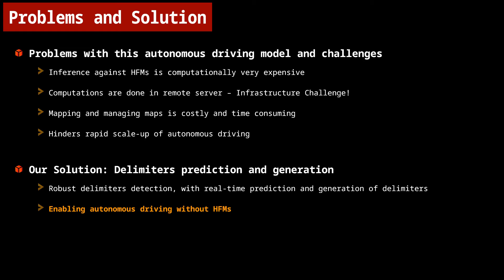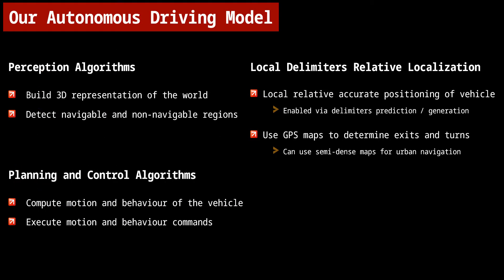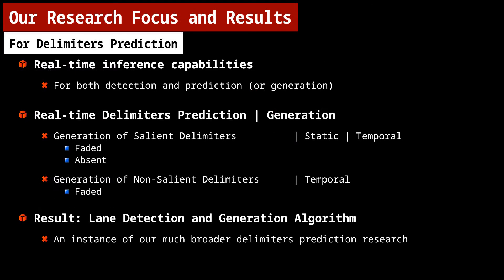This enables autonomous driving without HFMs. As we can both detect and generate delimiters in real time, it eliminates the need to project them from HFMs. Our autonomous driving model thus works by only local relative positioning of the vehicle with respect to delimiters, enabling autonomous driving using only GPS maps. Over the past few years, we have been researching end-to-end deep neural networks for robustly detecting delimiters with the ability to simultaneously generate both salient and non-salient delimiters in case they are faded, absent, or not clearly visible. One instance of this research is our lane detection and generation algorithm.